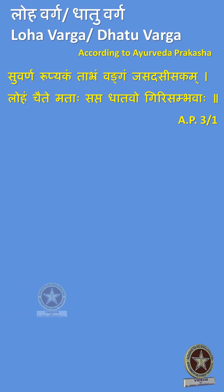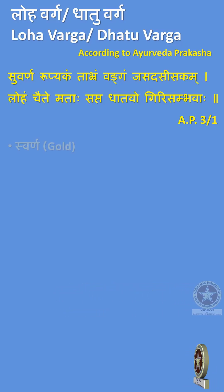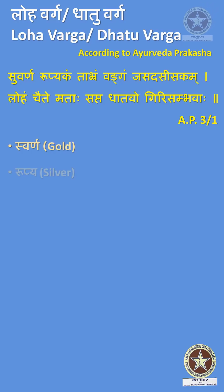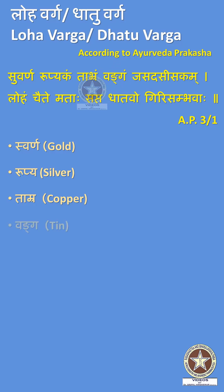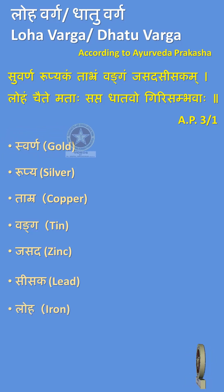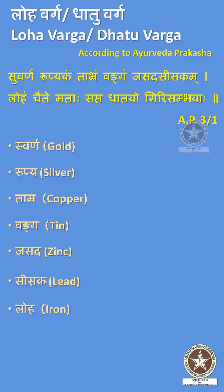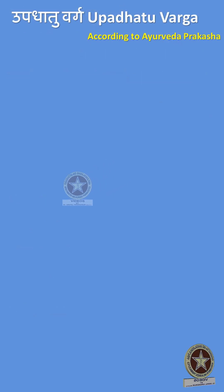Ayurveda Prakashah lists 7 drugs under Dhatu Varga: Suvarna (Gold), Rupya (Silver), Tamra (Copper), Vanga (Tin), Jasada (Zinc), Sisaka (Lead), and Loha (Iron). He also added one more category, that is Upadhatu Varga.